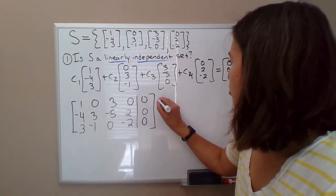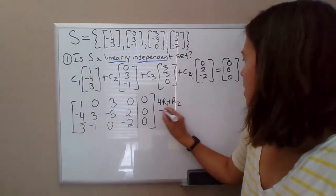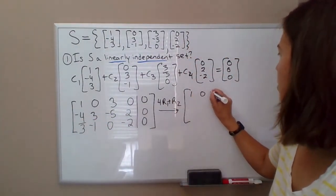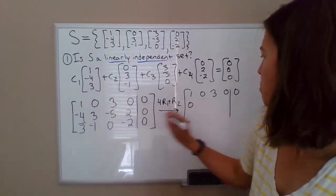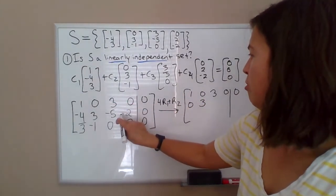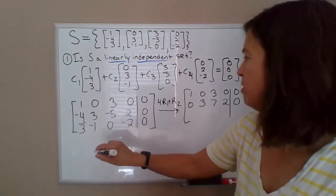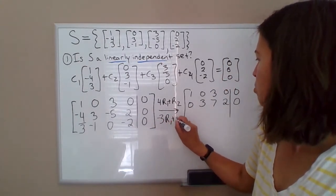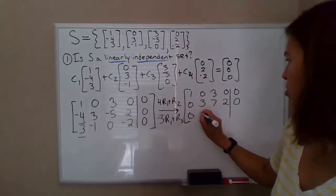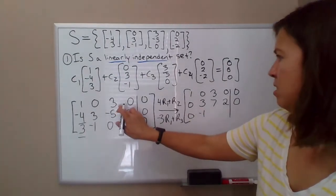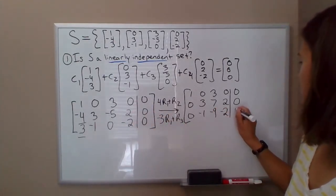So if we do four times row one plus row two to get a zero in this position right here, I'm going to leave row one alone for now. Row two, I'll have four plus negative four, zero plus three, this will be twelve, plus this will be seven, zero plus two, zero plus zero. I'm going to also do negative three row one plus row three to get a zero in this position here. So that'll be negative three plus three, zero plus negative one, negative nine plus zero, zero plus negative two, and then zero plus zero.